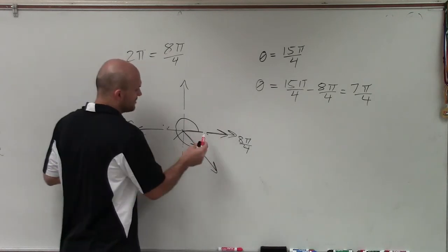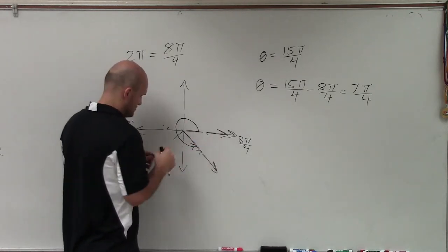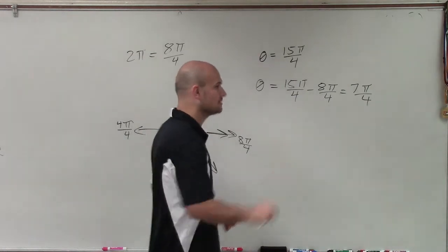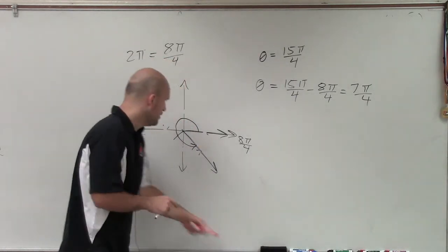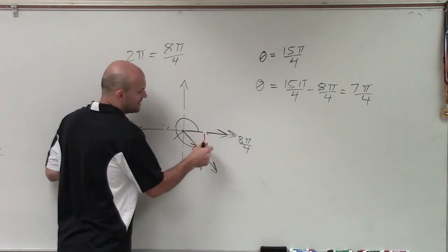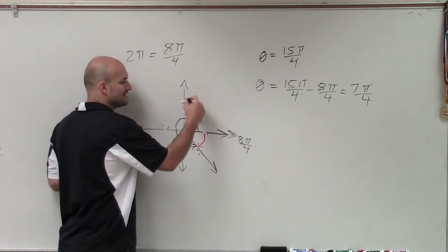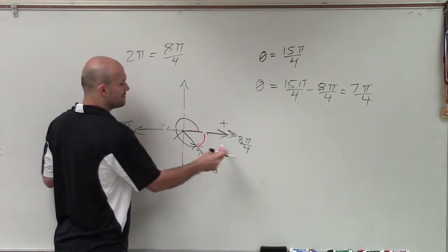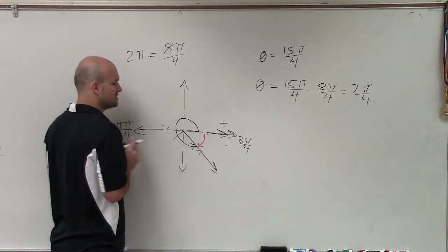However, there's another angle that we can get, is what about if we just went in the negative direction? So instead of going in the positive, right, counterclockwise is positive, what about if we just drew an angle in the negative direction?